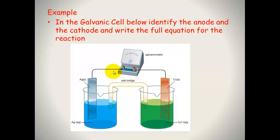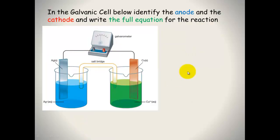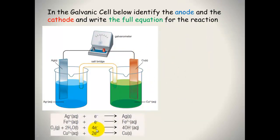This is an example question: in the galvanic cell below, identify the anode and the cathode and write the full equation for the reaction. We've got copper solid in a copper ion solution and silver solid in a silver ion solution. We need to establish which is the oxidation half reaction and which is the reduction half reaction. The first thing is to look at the electrochemical series — I've cut out the important part.